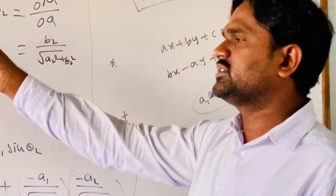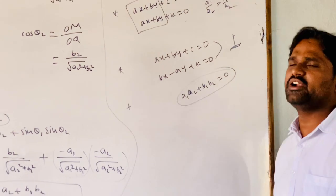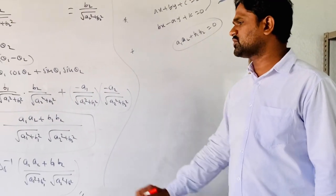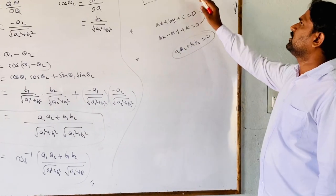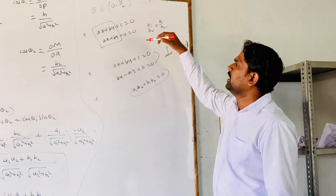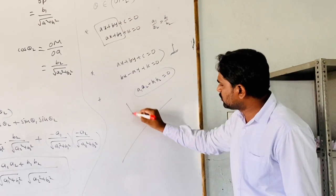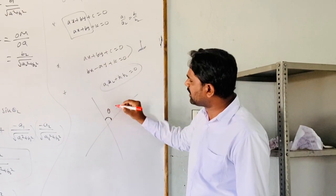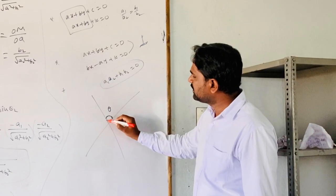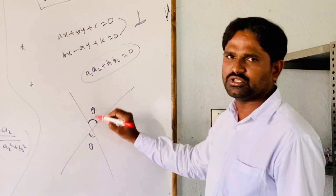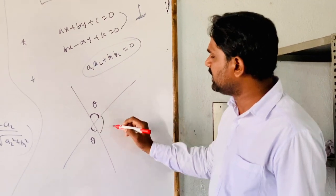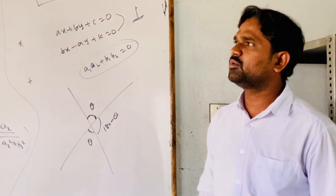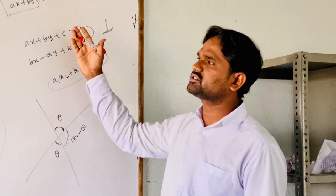In this class we discussed the angle between two straight lines in standard form, and derived: cos θ = (a1a2 + b1b2) / (√(a1²+b1²) × √(a2²+b2²)), where θ is an acute angle between 0 to π/2. When two lines intersect, there are two angles — θ and 180° − θ. The acute angle is θ and the obtuse angle is 180° − θ. Thank you.